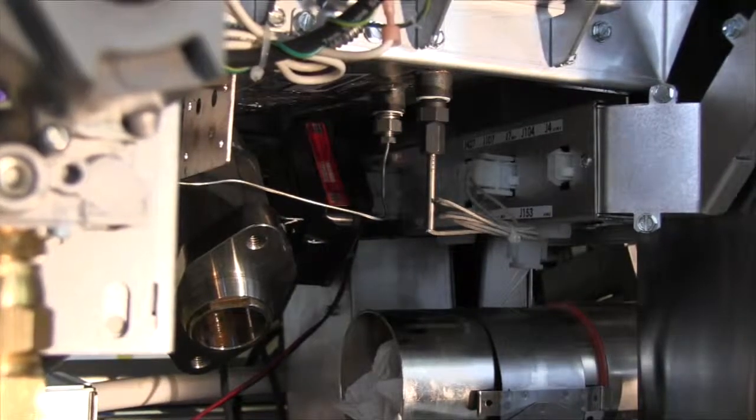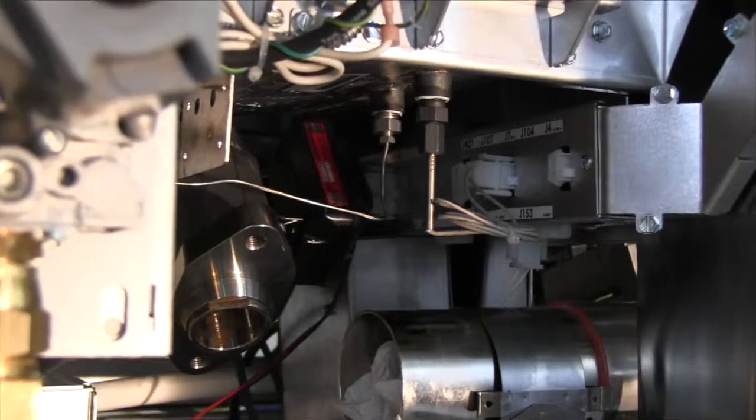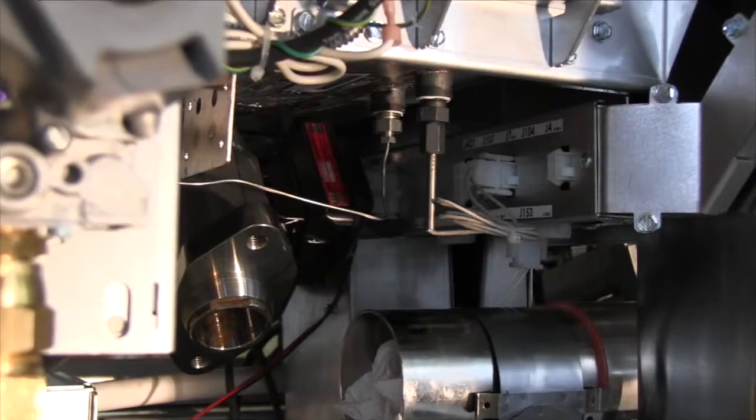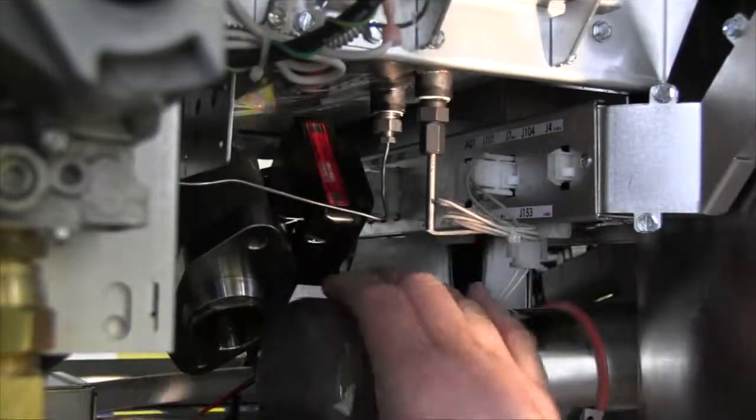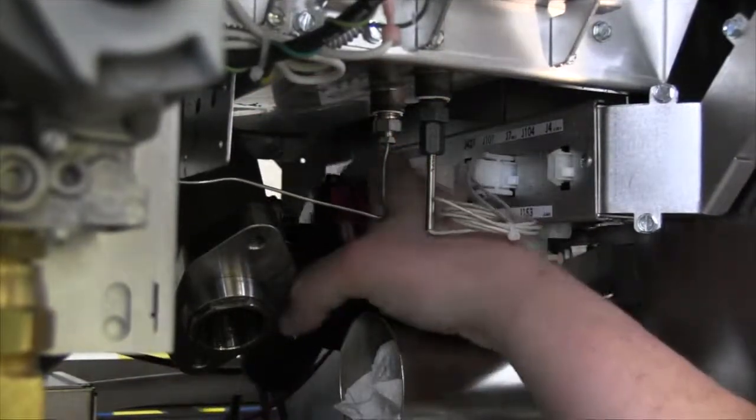Remove the access panel in the rear of the unit so that you can unplug the Molex connector for the actuator. Once unplugged and the mounting screws have been loosened, you can slide the actuator off the drain and remove it from the equipment.